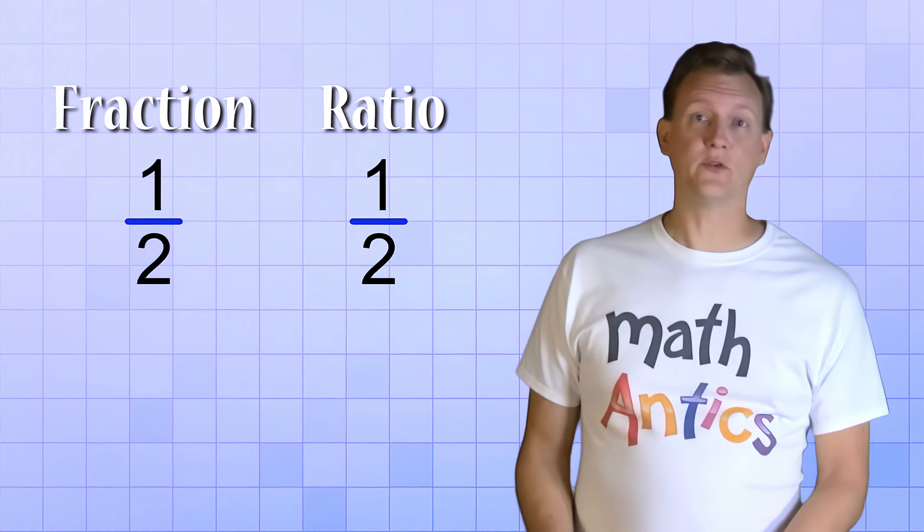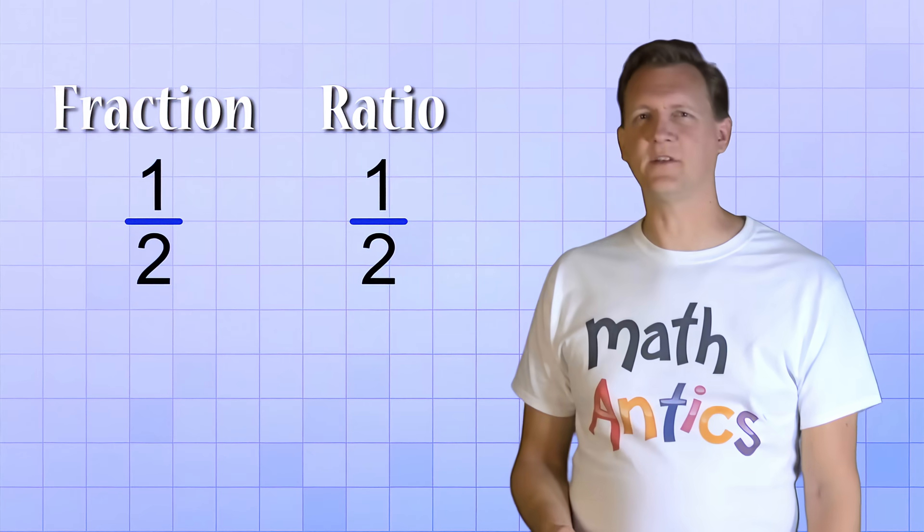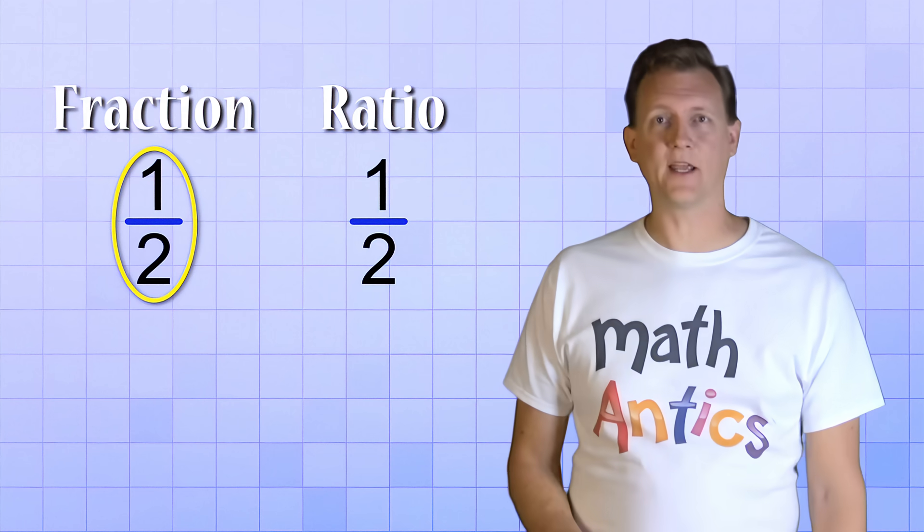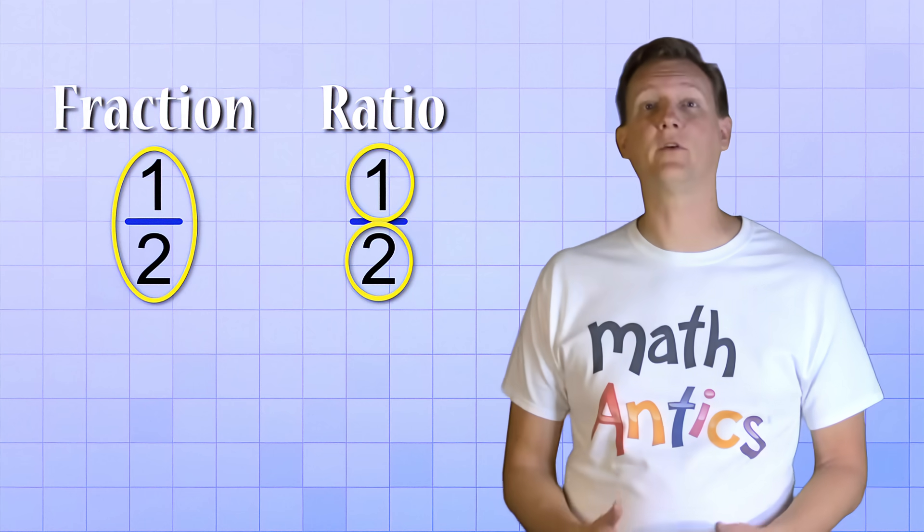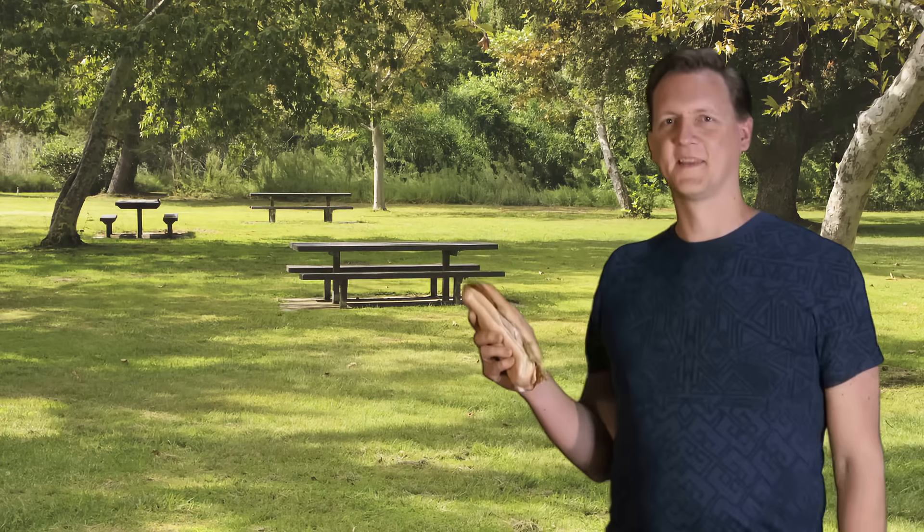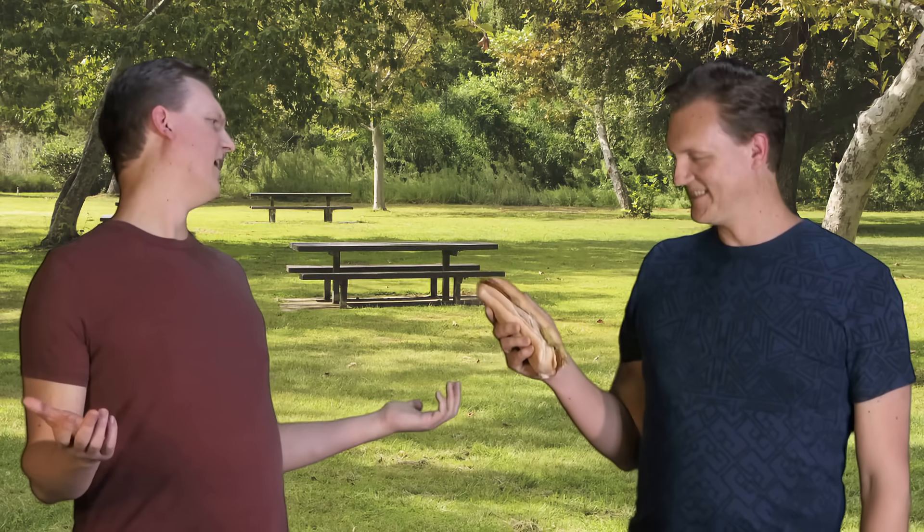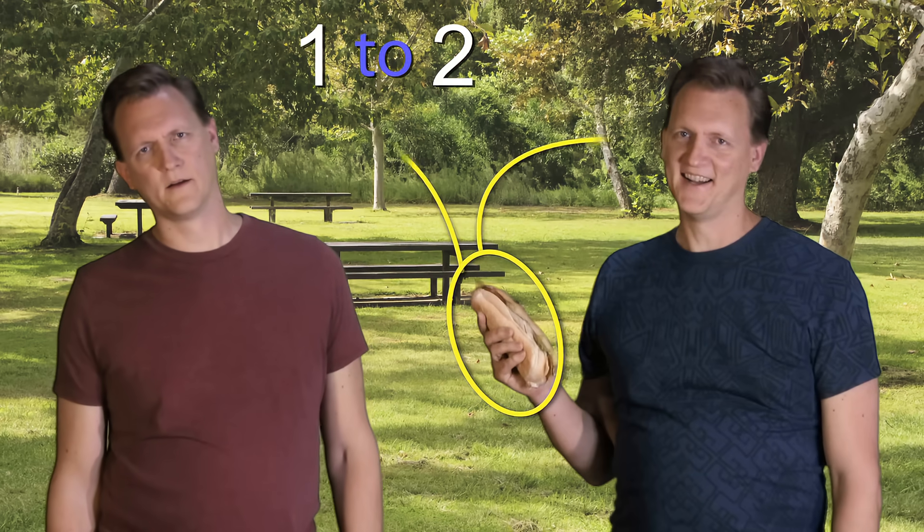Now let's see how we can use the ratio 1 over 2. With the ratio, we don't treat it as just a single number. Instead, we pay close attention to the top and bottom numbers because we use them to refer to different things. For example, let's say we're planning to go on a picnic. For every two people going on the picnic, we're only bringing one sandwich. In that case, we'd say that the ratio of sandwiches to people is 1 to 2, or 1 sandwich per 2 people.